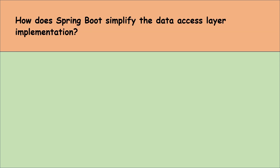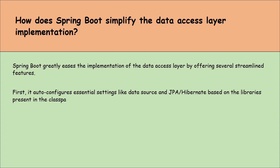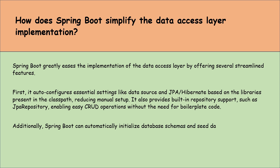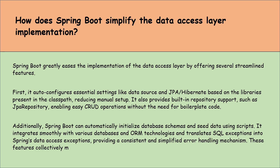How does Spring Boot simplify the data access layer implementation? Spring Boot makes implementation of the data access layer easy by offering several streamlined features. It auto-configures essential settings like data source and JPA based on libraries present in the classpath, reducing manual setup. It provides built-in repository support such as JpaRepository, enabling easy CRUD operations without boilerplate code. Additionally, Spring Boot can automatically initialize database schemas and seed data using scripts. It integrates smoothly with various databases and ORM technologies, and translates SQL exceptions into Spring's data access exceptions, providing a consistent and simplified error handling mechanism.